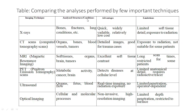Here we have a comparison of imaging techniques. For X-ray: the structures analyzed are bones, fractures, and lung conditions. Advantages are that it is quick, widely available, and relatively low cost — every hospital will have one. Limitations are limited soft tissue detail and exposure to radiation. When you go for an X-ray you cannot open your eyes and must hold the board because of radiation, and it cannot give an image of heart or soft tissues.